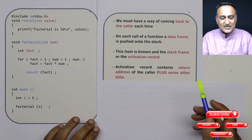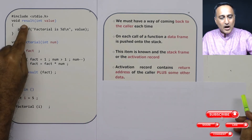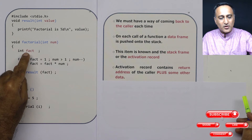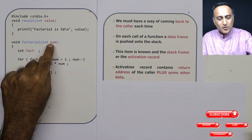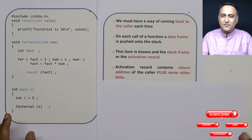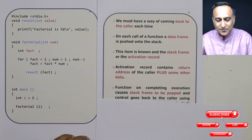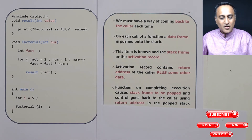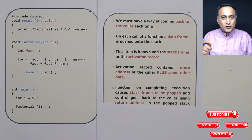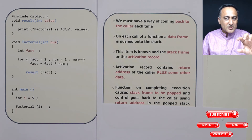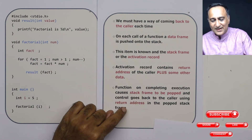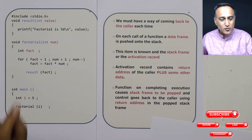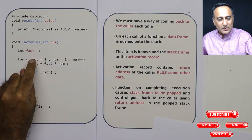The activation record contains the return address — where, after executing factorial, the program should come back to in main — plus information about parameters and local variables, and a few other things not important at this stage. Once result completes execution, that activation record is popped out or removed from the stack, and using the return address stored in that popped frame we are able to come back to factorial.